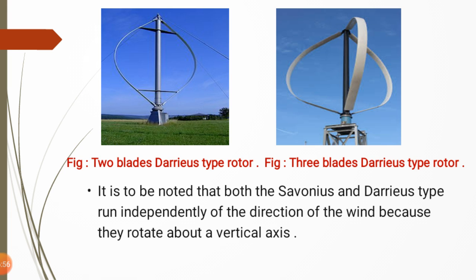It is to be noted that both the Darrieus type and Savonius type rotors run independently of the direction of the wind, because they rotate about the vertical axis. Wind can flow from any direction, and these rotors have no problem with wind direction change — they can collect wind from any direction. This is a very useful advantage over horizontal axis wind machines.